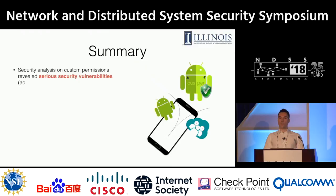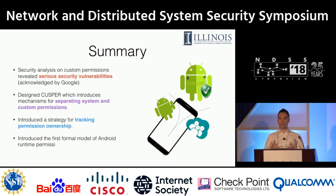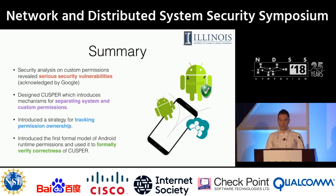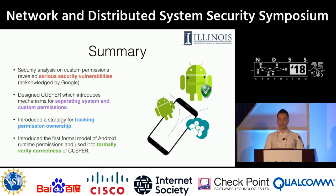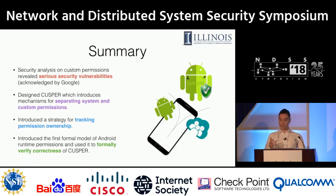In summary, we have performed an in-depth analysis of the Runtime Permission Model focusing on custom permissions, which revealed serious security vulnerabilities. In response, we have designed Casper, which incorporates mechanisms for distinguishing between custom permissions and system permissions, and we introduce an easy and backward-compatible strategy for tracking permission ownership. Finally, we developed the first formal model of Android Runtime Permissions and used this to formally verify the correctness of Casper. I'll conclude my presentation and I'll be happy to address any questions.